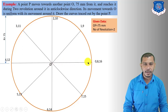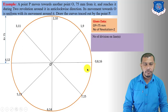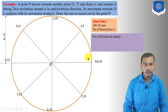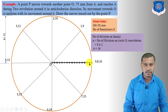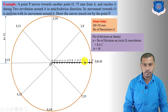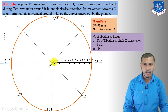Now divide the line into equal divisions. Using the equation — number of divisions on line = number of divisions on circle × convolutions — we get 8 × 2 = 16. Divide this line into 16 equal parts, numbered 0 through 16.